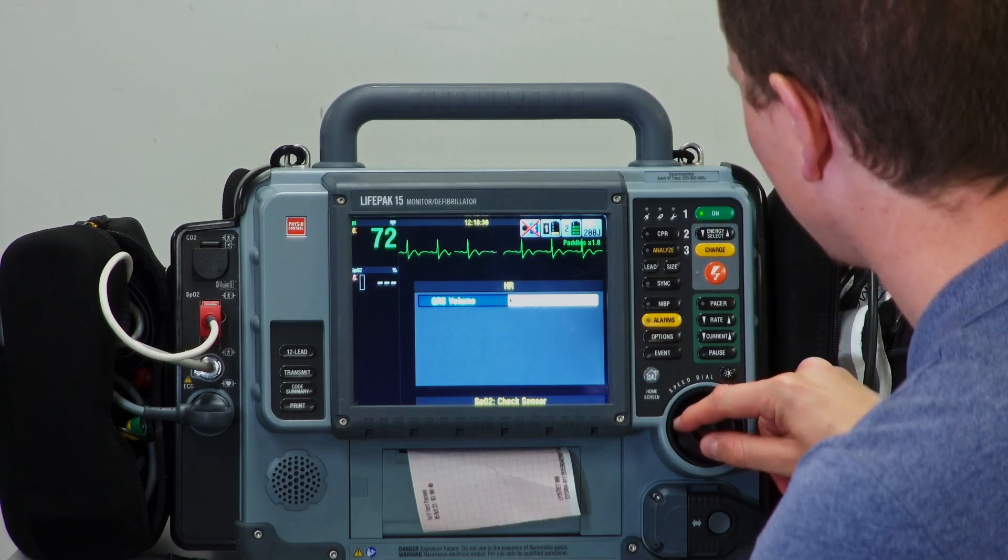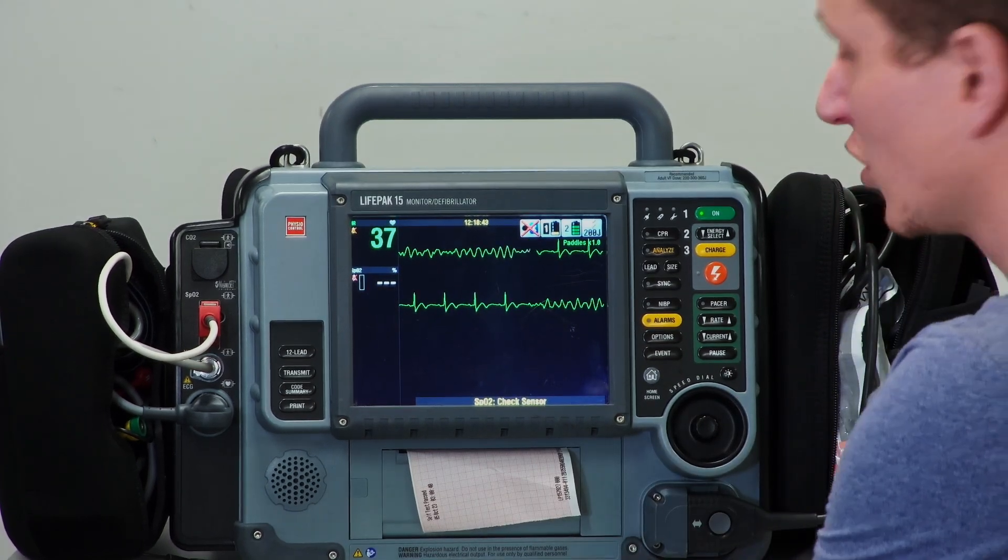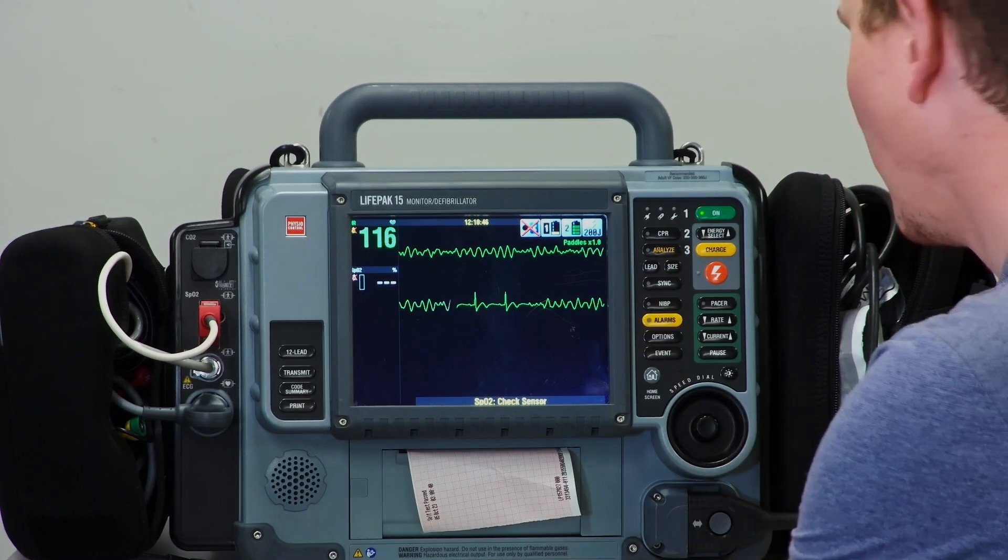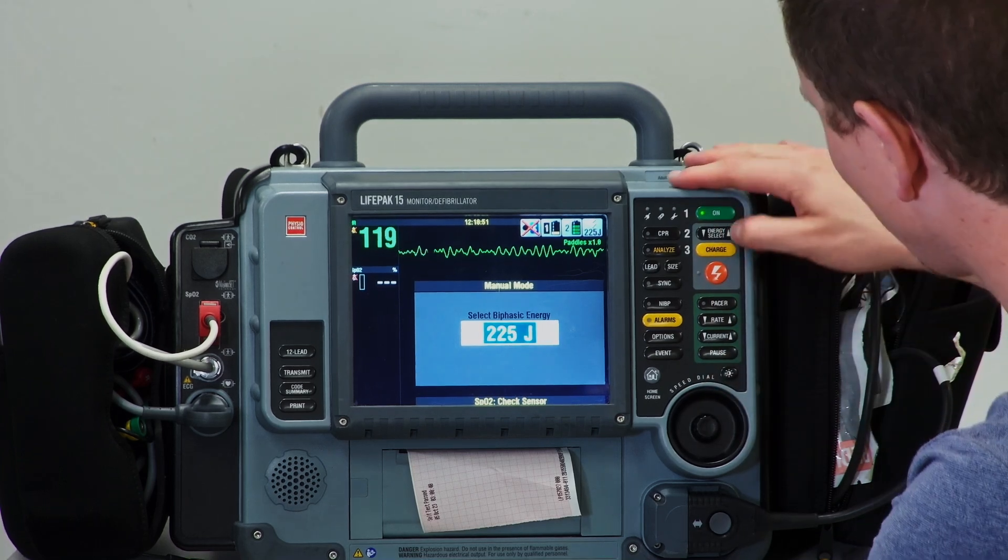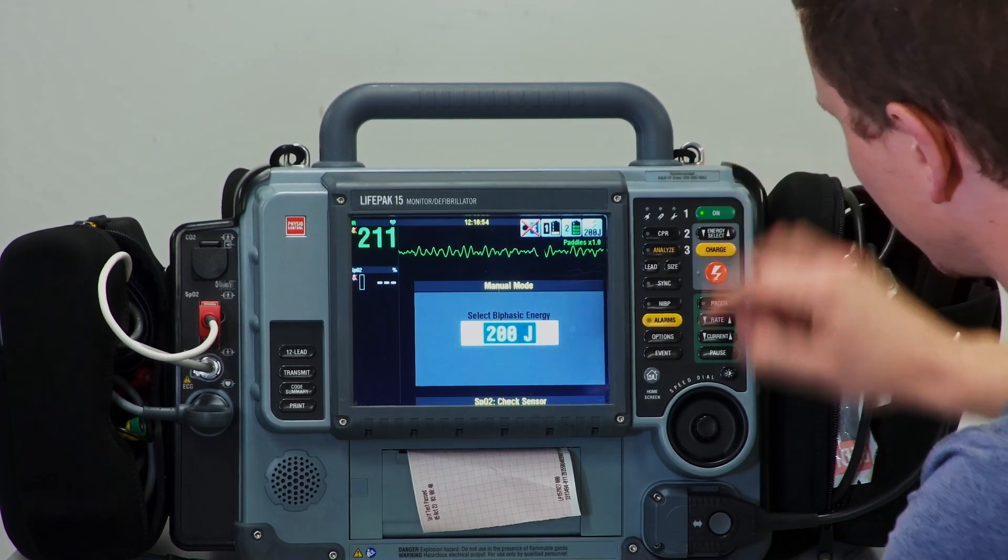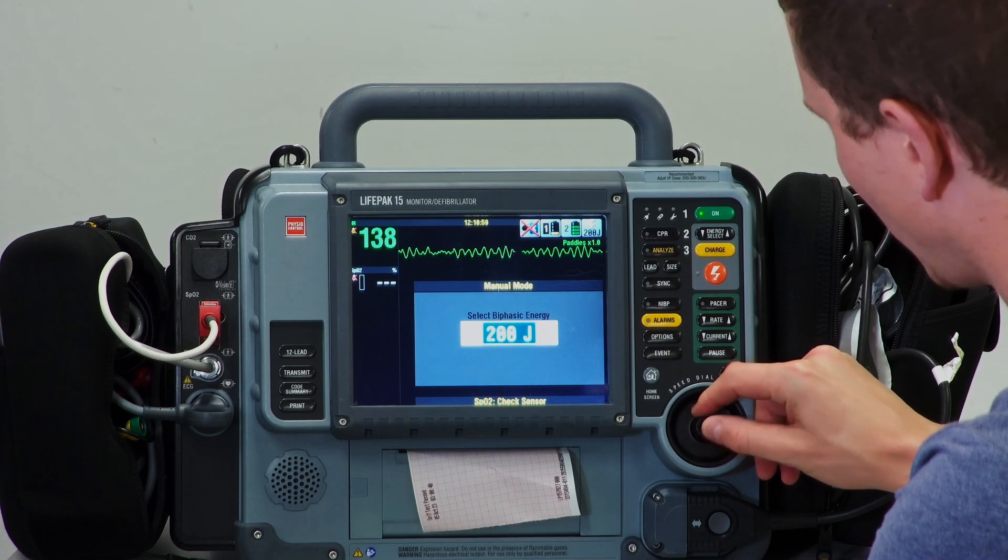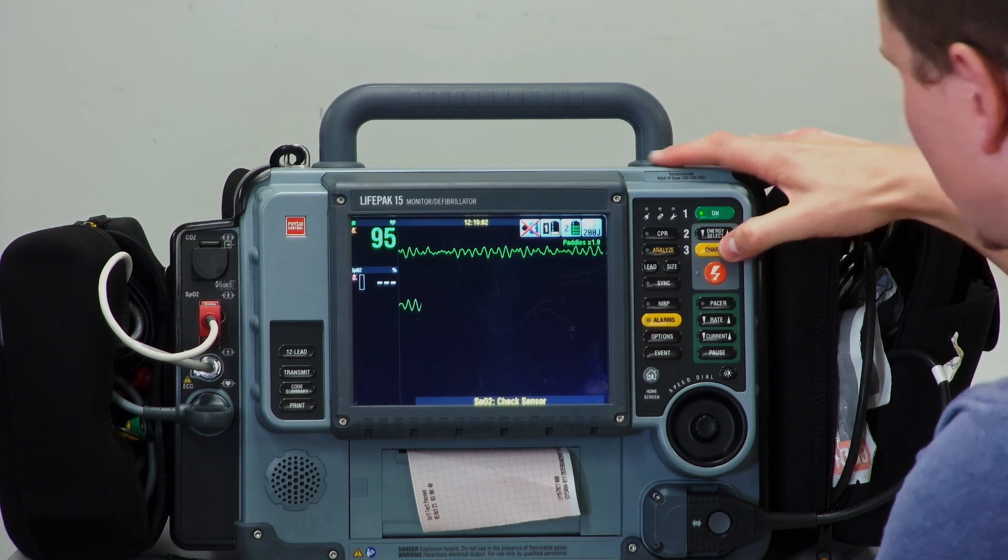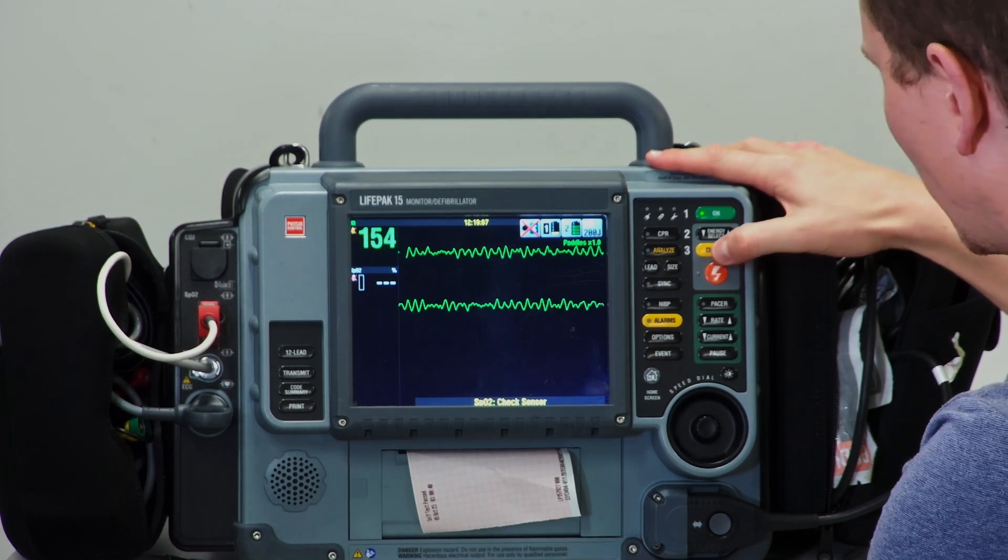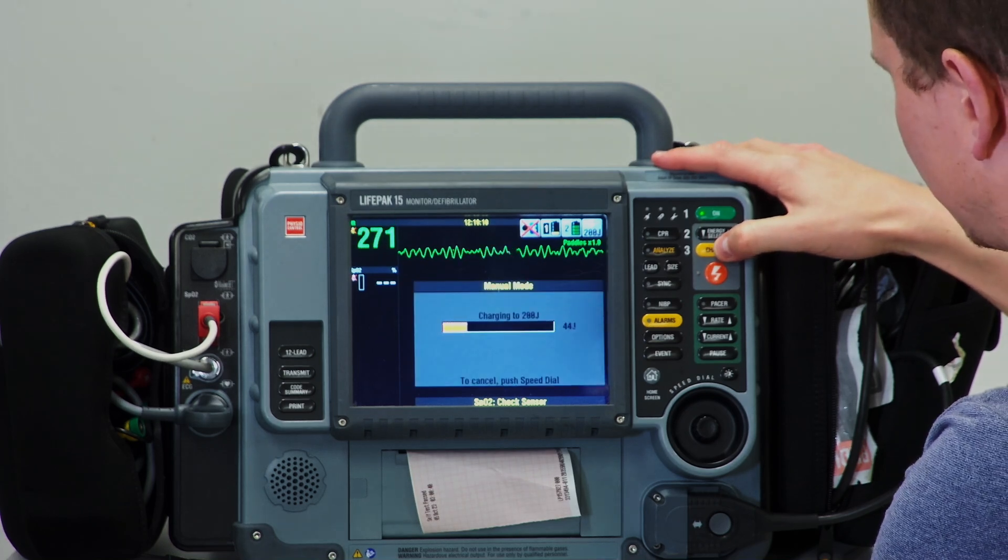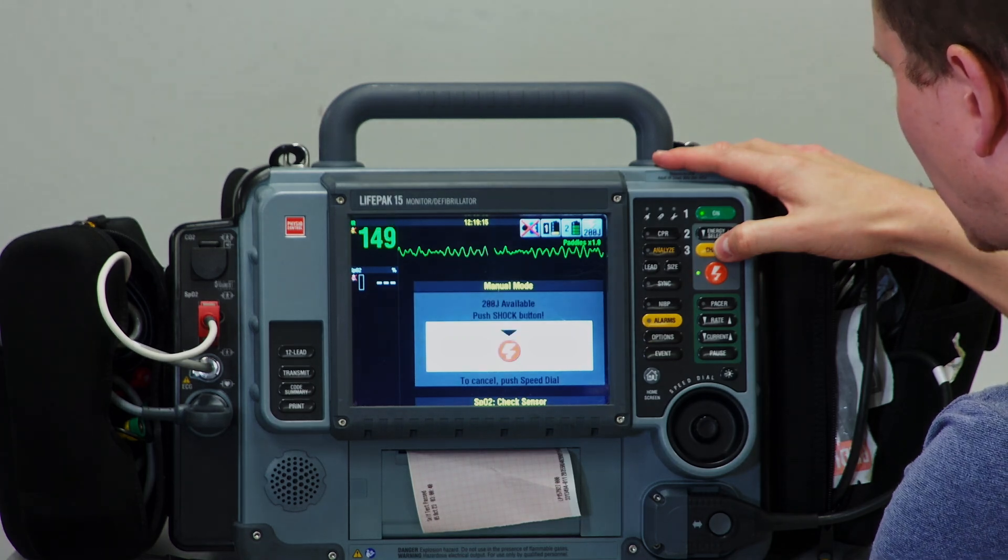Let's go through the defib or shocking. I've put it into a shockable rhythm—we are in ventricular fibrillation. If we want to charge, there's just a charge button. You can select the energy—if you select energy you can push up and down or rotate the dial and select whatever joules you want, then select in and it's done. To charge, you just hit the charge button, and once it's charged you can shock it.